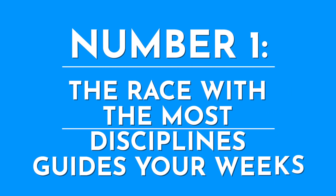The first guideline is that the race with the largest number of disciplines structures your training week. For example, if you have a duathlon and a triathlon scheduled at the same time, the triathlon has three disciplines — swim, bike, run — while the duathlon has just bike and run. So the triathlon takes precedent. Similarly, if you have a triathlon and a marathon, the triathlon has three disciplines, so your week is structured for triathlon training.